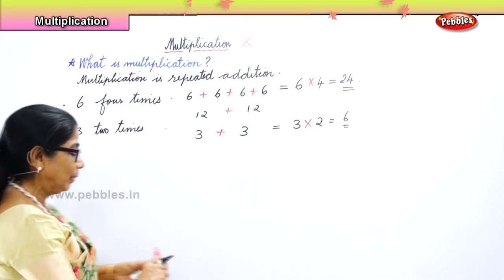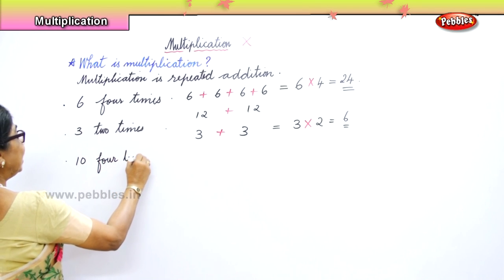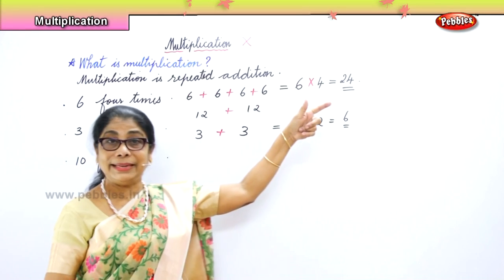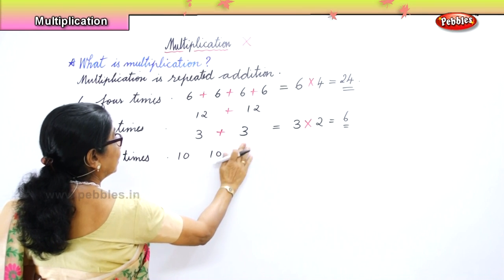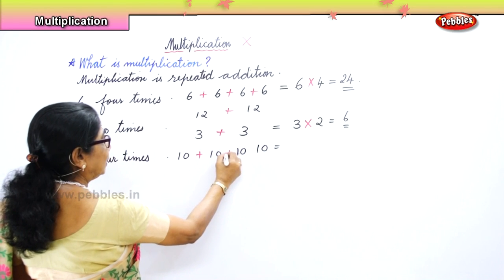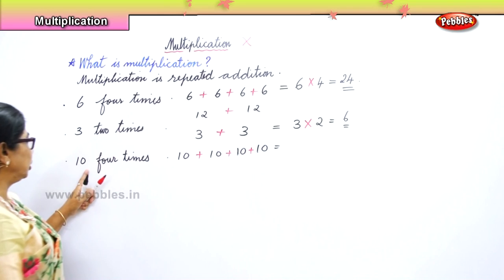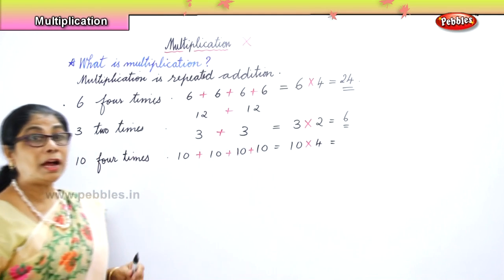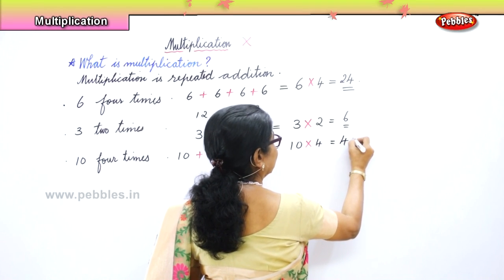Let's take another number: ten, four times. What is the meaning of ten four times? Ten plus ten plus ten plus ten. That is four times — repeated addition. Ten, twenty, thirty, forty. So ten fours are forty.